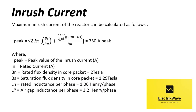Maximum inrush current of the reactor can be calculated as per the given formula, where I_peak equals peak value of the inrush current in amperes; N equals rated current in amperes; B_N equals rated flux density in core packet equals 2 tesla; B_S equals saturation flux density in core packet equals 1.29 tesla; L_N equals rated inductance per phase equals 1.06 henry per phase; L_AI equals air gap inductance per phase equals 3.2 henry per phase. So, for the 120 MVAR, 420 kV shunt reactor, maximum inrush current would be 750 ampere peak.